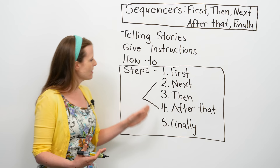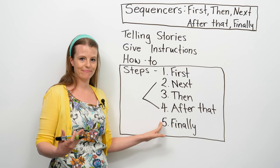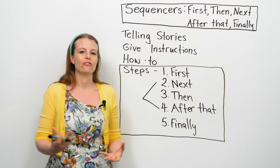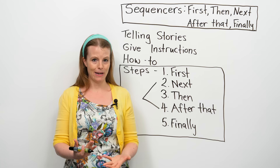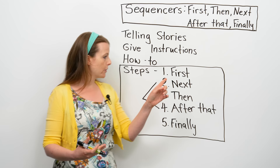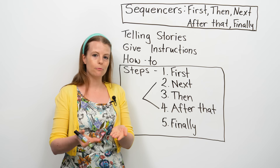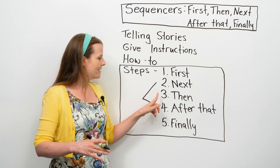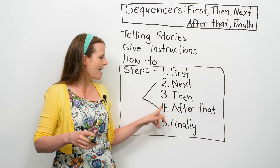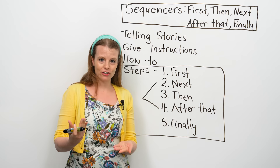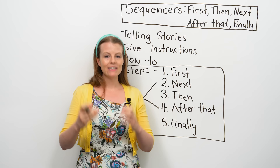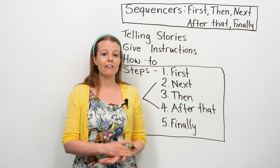I have here my five sequencers: first, next, then, after that, and finally. These are the sequencers we're focusing on in today's lesson. Imagine you want to tell somebody how to make a hamburger. First, you take a bun. Next, you put lettuce on the bun. Then, you add a hamburger, or the meat. After that, maybe you put ketchup or mustard. And finally, you put on the top bun and you eat it. So these are the five steps in making a hamburger — an example of how we use this type of language.